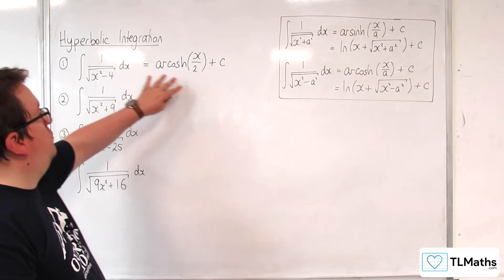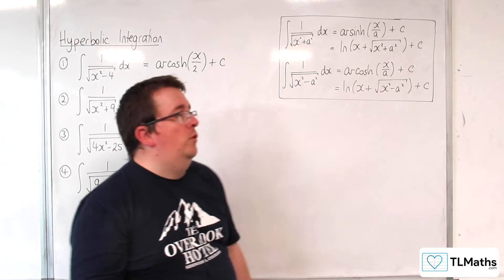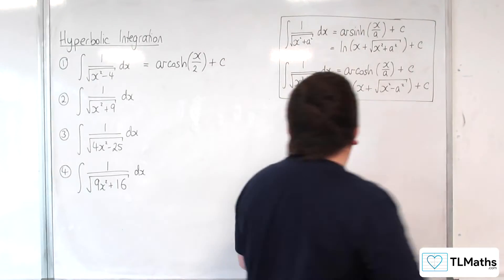And of course we could write that as log of x plus the square root of x squared take away 4 plus c also. So that's our first one.